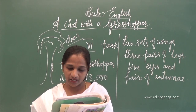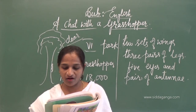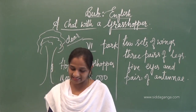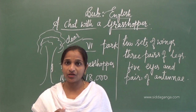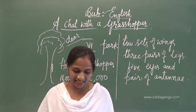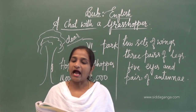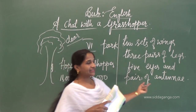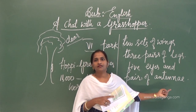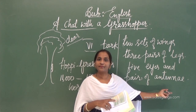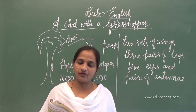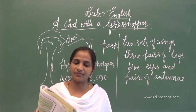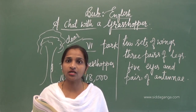Raju, while observing Hoppy's body, asks: We have two ears. Do you also have ears? Then Hoppy replies: I don't have ears like you. But the antennae help me to pick up vibrations from the air and ground. With the help of the antennae, the grasshopper comes to know what is going on around it — sensing vibrations from the air.